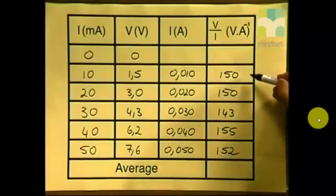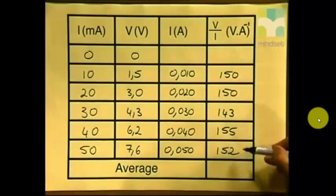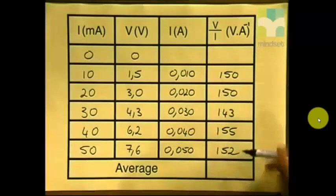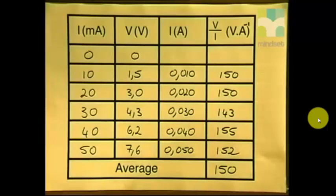So what we do now is to calculate an average value of the ratio of V over I. If we take the values of all our ratios of V over I, and we add them up, and divide it by 5, we will get an average value of 150 volts per ampere.